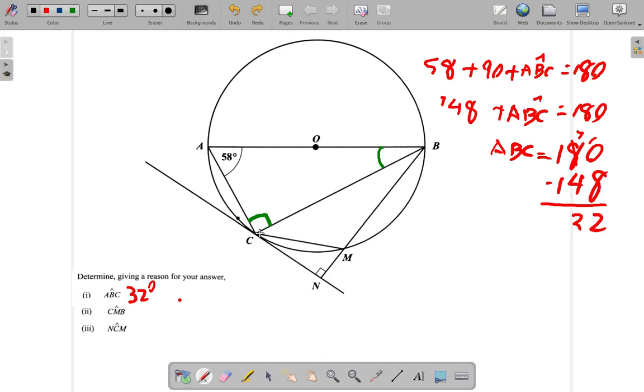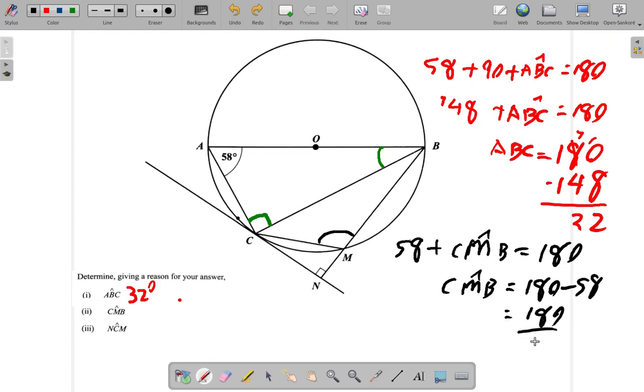In this case, what you have is that angle CAB and angle CMB lie on chord BC in alternate segments, so the sum must be 180 degrees. So 58 plus CMB is equal to 180 degrees. So CMB would be 180 minus 58.